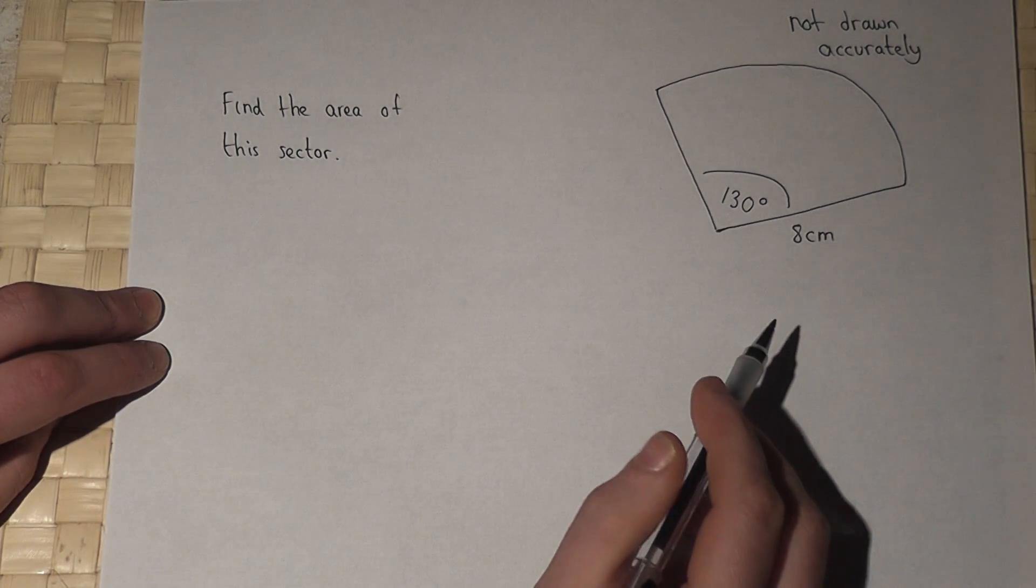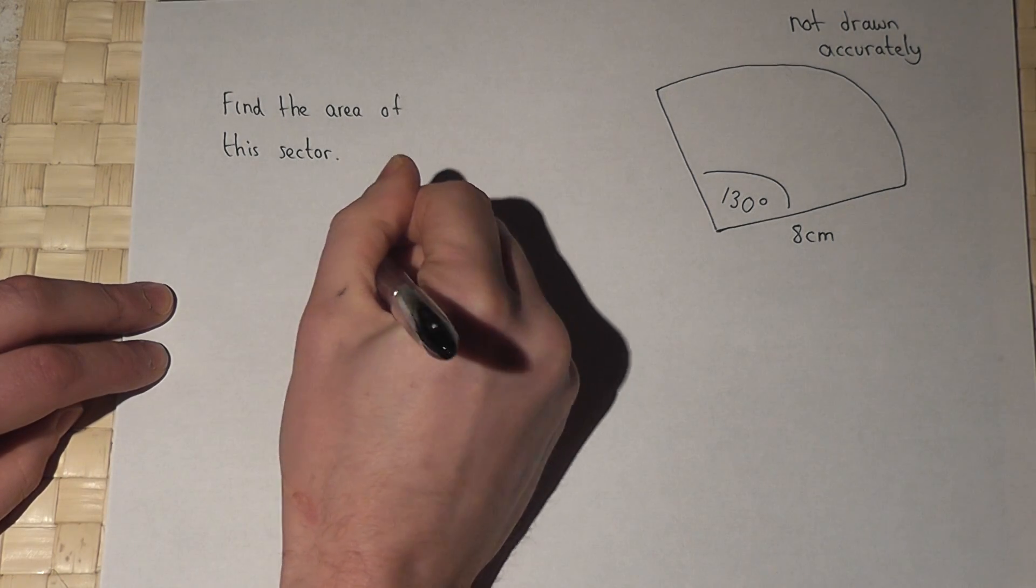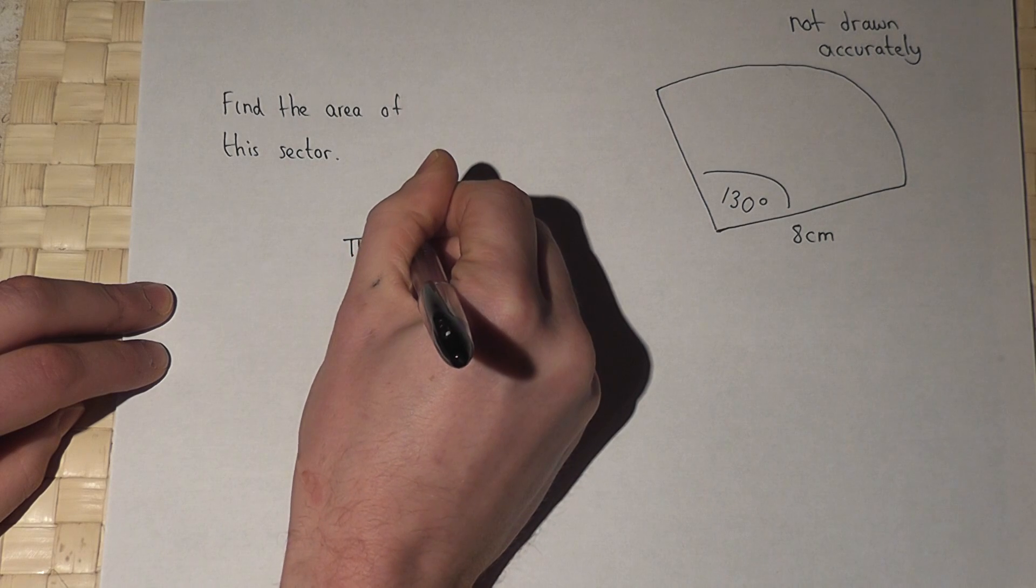Now, a sector is part of a circle, and if it was a full circle, the area would be pi times 8 squared.